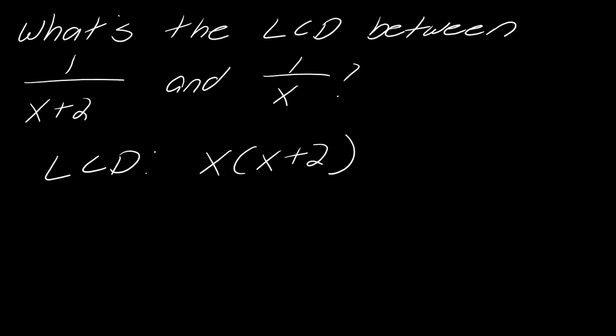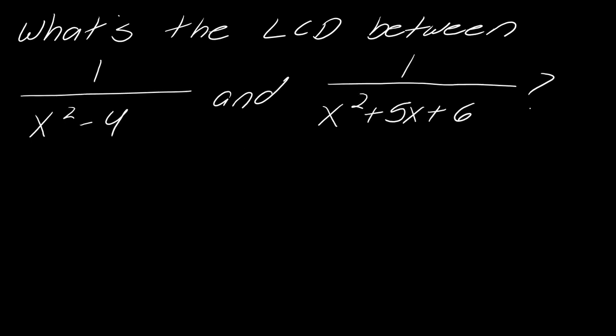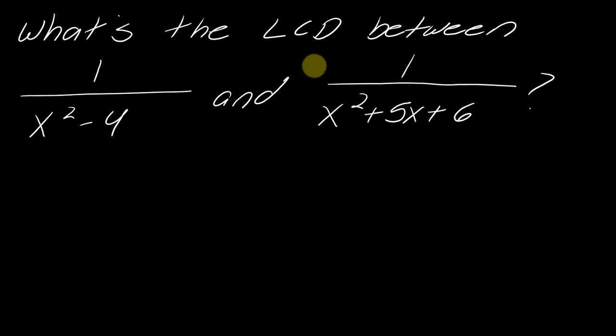Let's extend this idea. How do you find the LCD between 1 over (x² − 4) and 1 over (x² + 5x + 6)? If you've been working with rational expressions you know that once you see things like this you'll probably have to factor them. I want you to factor both of these, apply the LCD logic we've been using, and see if you can come up with the LCD.